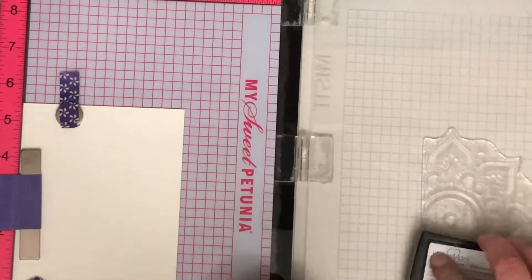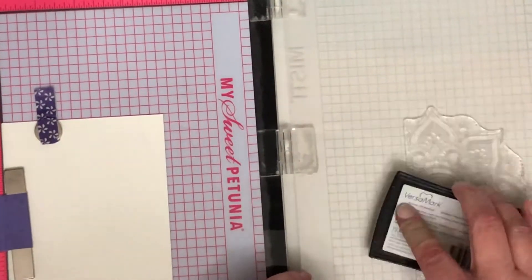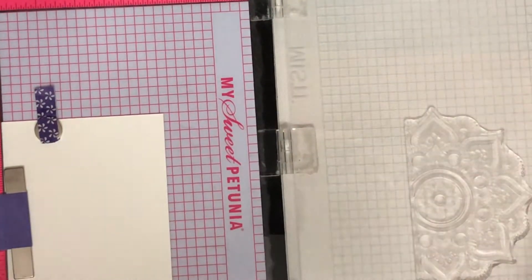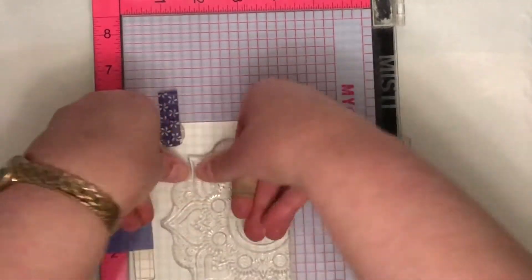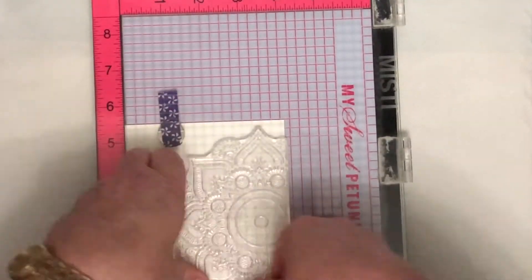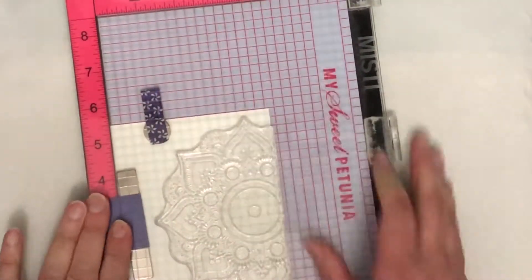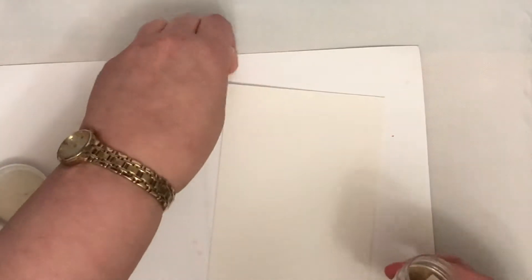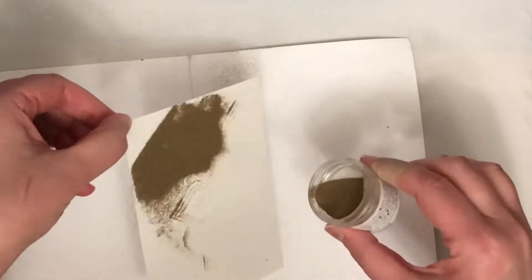I'm actually stamping it twice because I'm using watercolor paper and this watercolor paper from Canson has a little bit of texture to it. Not a heap but a little bit, so I wanted to make sure that I got that clear sticky ink into all the nooks and crevices on that cardstock.